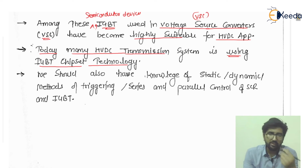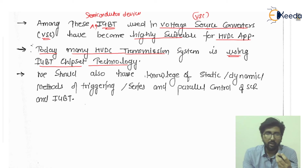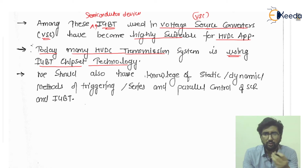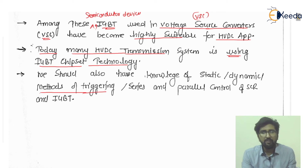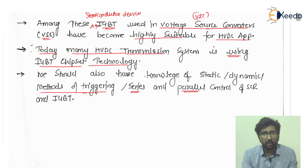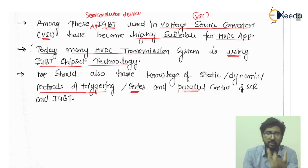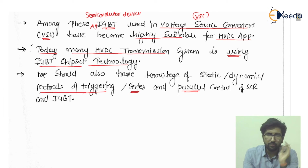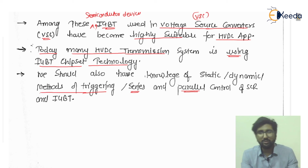We should have key knowledge of the static and dynamic characteristics, and the methods of triggering — how we can trigger the power semiconductor devices, their connections, whether in series or in parallel. This way, controllability of the system can be enhanced and the power transfer capability can also be increased. I hope you have understood successfully. See you in the next lecture.